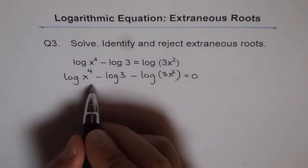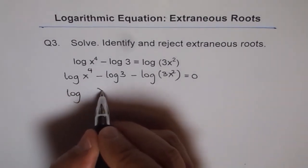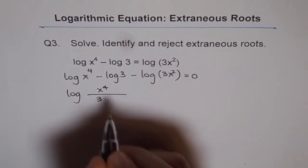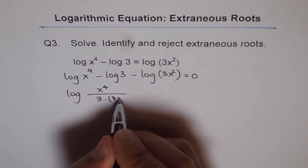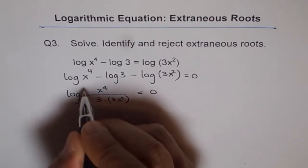So by combining these terms we can get log of x to the power of 4 divided by, these are minus terms, divided by 3 and this is 3x squared equals to 0.